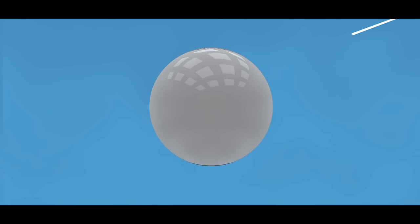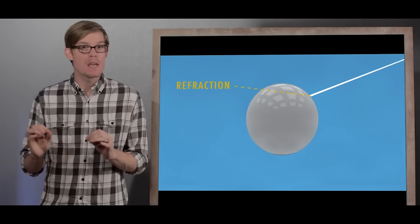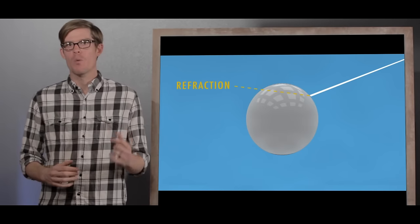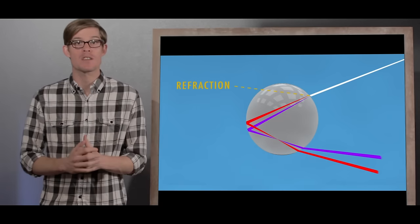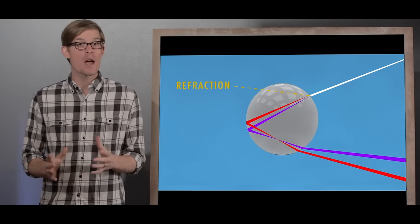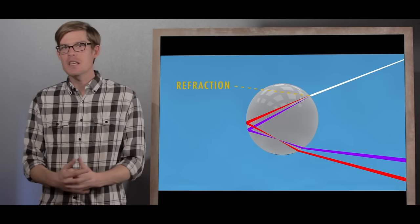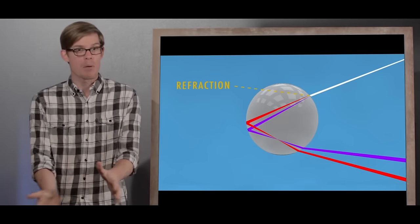Here's where we add in the physics. Sunlight starts by entering a raindrop from behind you. The light goes from one medium, air, into another, water. And that causes it to bend slightly, thanks to a process called refraction. Different wavelengths of light bend at different angles, so this causes the white light to separate.